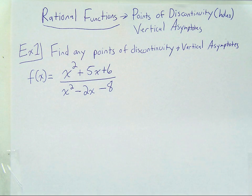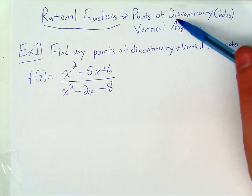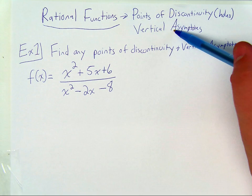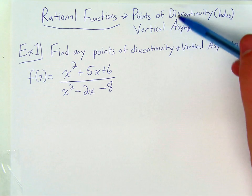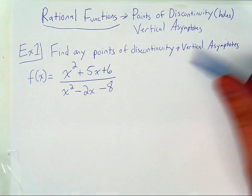In this video, we're going to talk about, in a rational function, how do you find points of discontinuity and vertical asymptotes? Both of these concepts will come out of domain restrictions for this function.